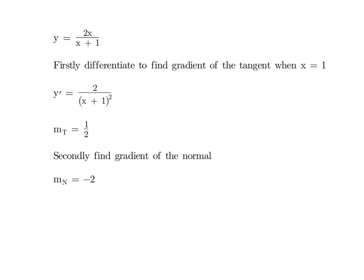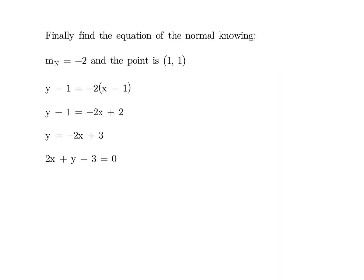Secondly, we find the gradient of the normal using the negative reciprocal, so our gradient of the normal is negative 2. And finally, the equation. We know that the gradient of the normal is minus 2, and the point is 1, 1. Substituting into y minus y1 equals m times x minus x1, we end up with y equals minus 2x plus 3, or in general form, 2x plus y minus 3 equals 0. Thank you.